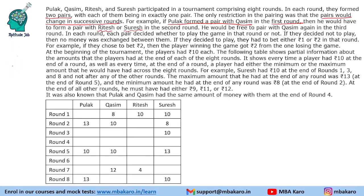In each round, each pair decided whether to play or not. If they decided not to play, no money was exchanged. If they decided to play, they bet either 1 rupee or 2 rupees in that round. For example, if they chose to bet 2 rupees, the player winning the game got 2 rupees from the one losing. So the money exchanged is either 1 rupee or 2 rupees; if there is no play, there is no exchange.